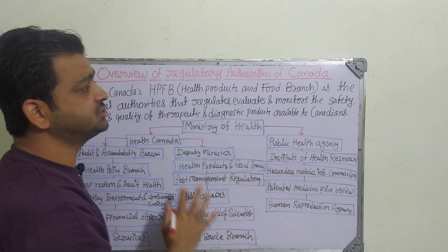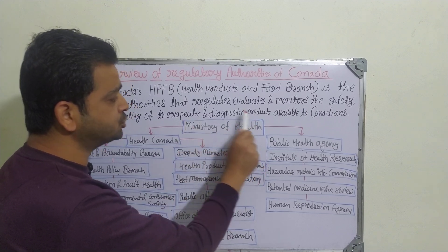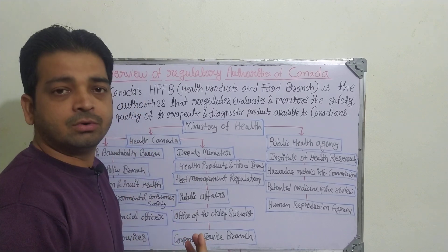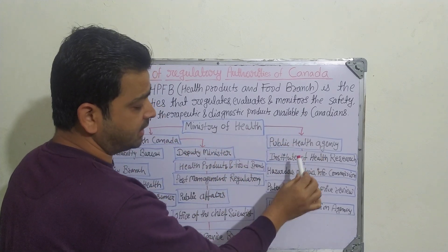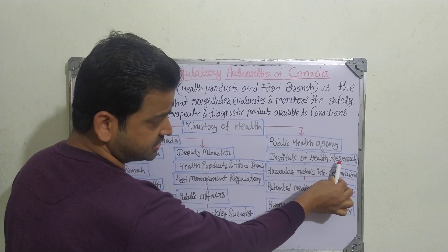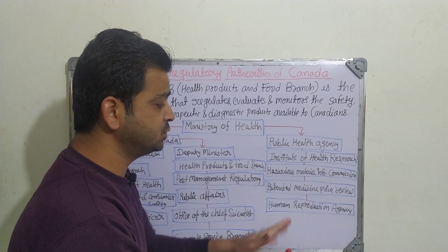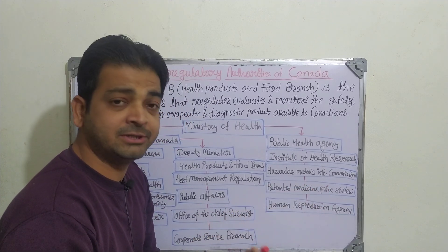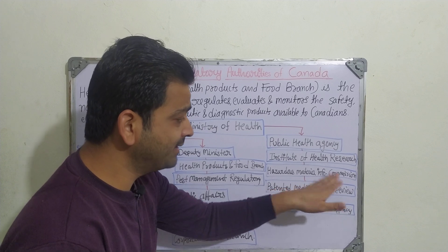Let us now discuss the organizational structure of the Canadian health system and how it regulates. At the top sits the Ministry of Health, as in most countries worldwide. Under it, there are different commissions: the Public Health Agency, the Institute of Health Research — which monitors clinical trials — and the Hazardous Materials Information Commission, which informs about substances that may be toxic or hazardous to the environment and people.